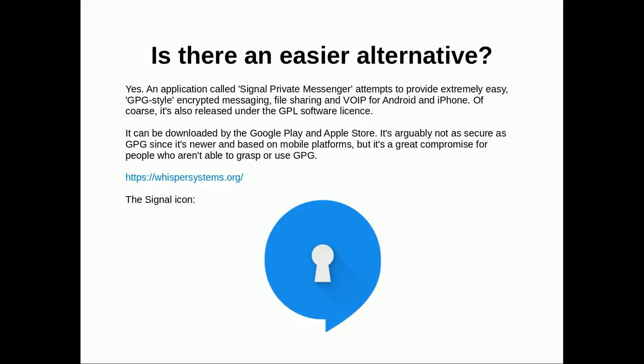Is there something easier? GPG is hard — I don't expect most people in my life to ever use it. But there is something simpler: a GPL software called Signal. It was basically a combination of two open source programs — TextSecure and RedPhone — combined into a private messaging platform. You can get it on both Google Play and the App Store, and there's also LibreSignal available on F-Droid. This is great because most people who can't use GPG can use this instead.